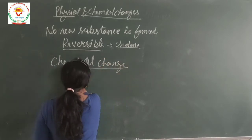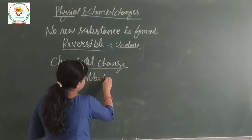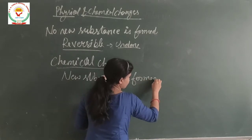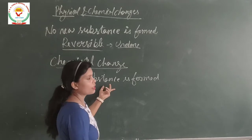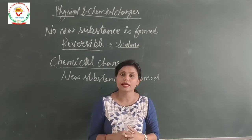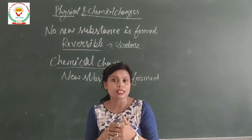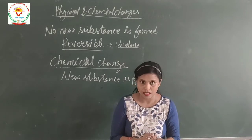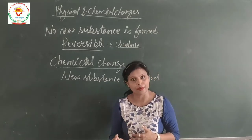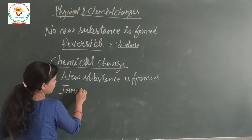Now let's talk about chemical changes. Chemical changes are those in which a new substance is formed. For example, if I burn a paper, it gets converted into ash. That ash is a different substance, and I cannot convert ash back into paper.